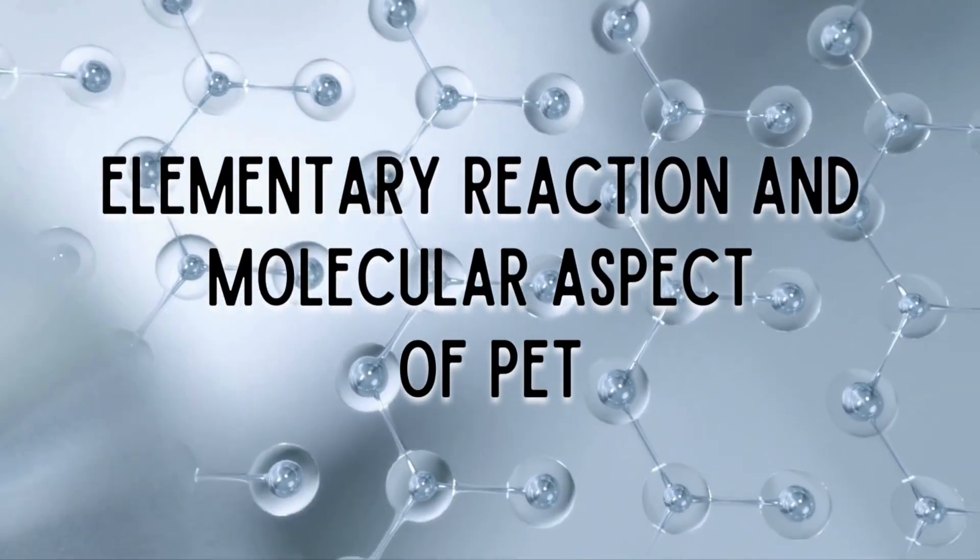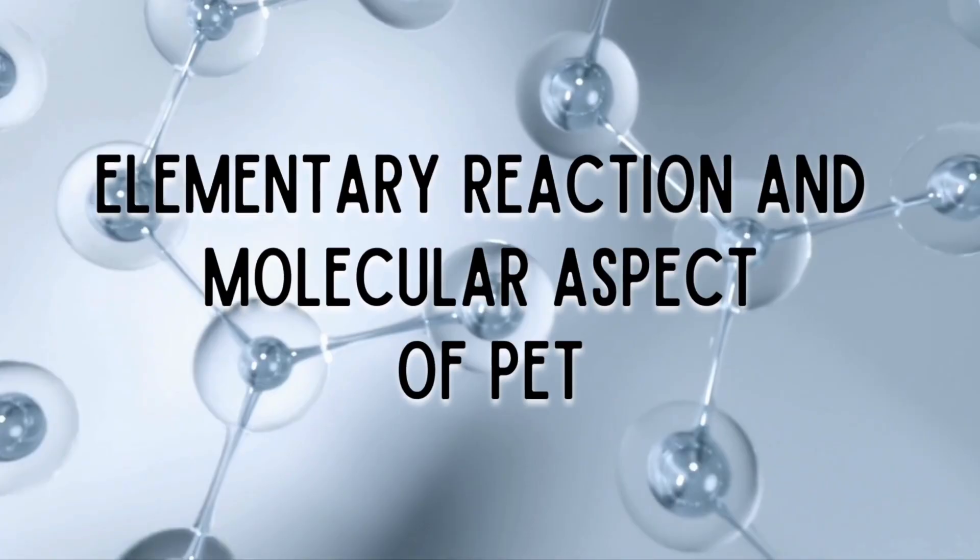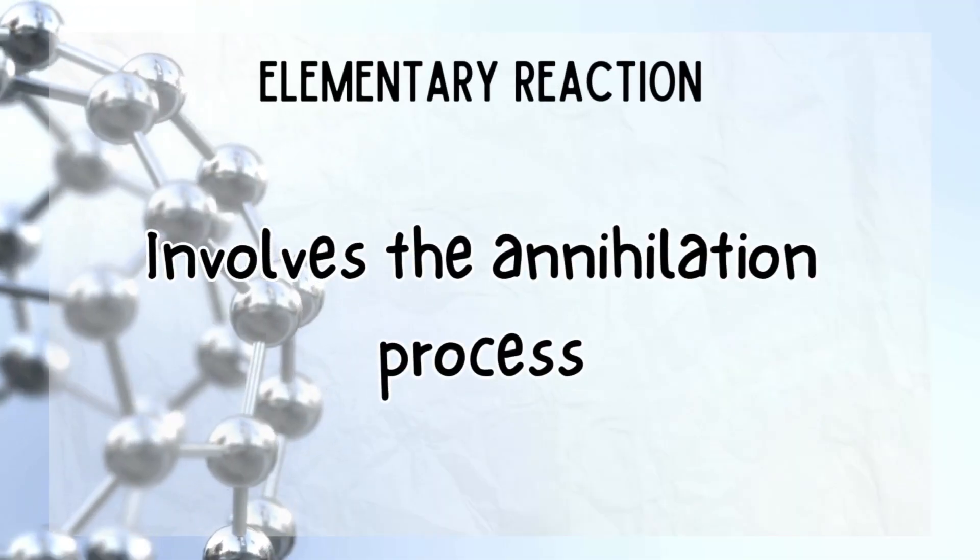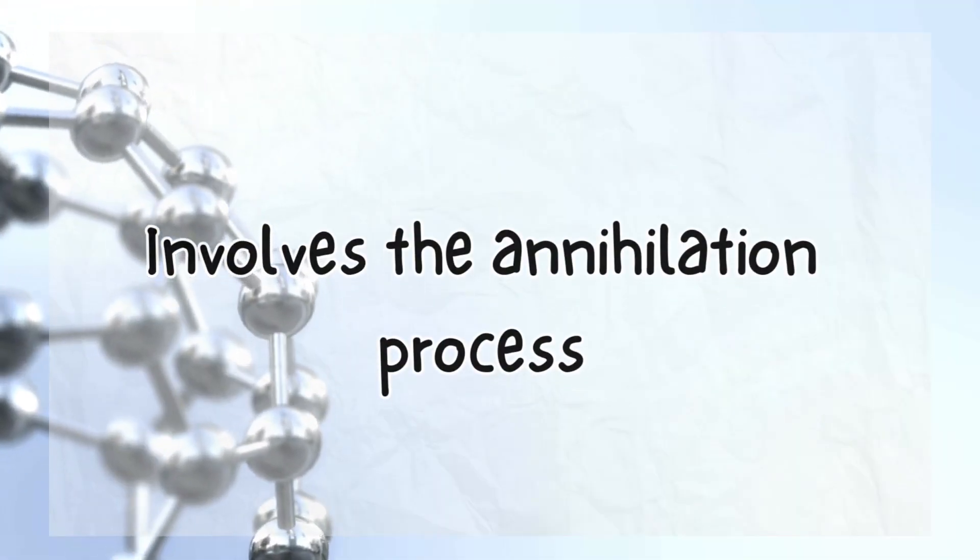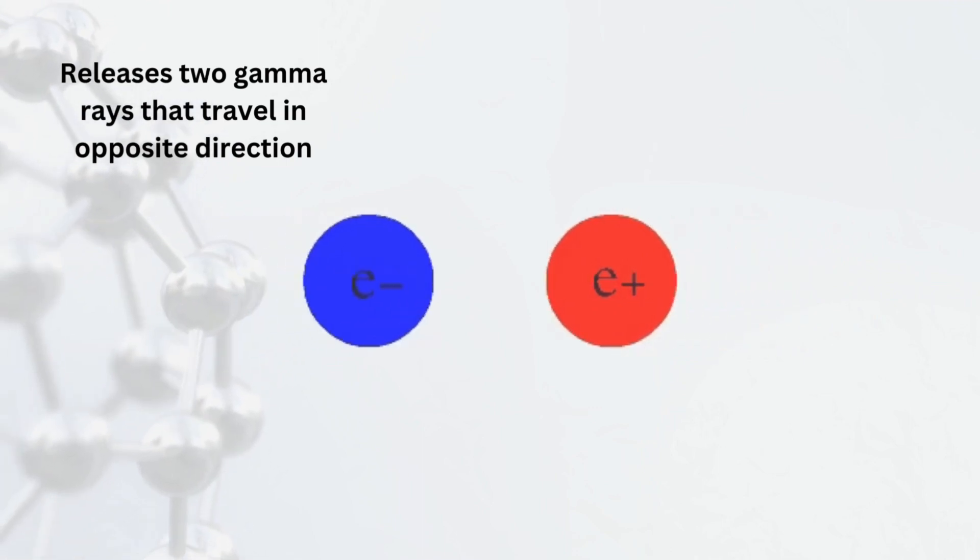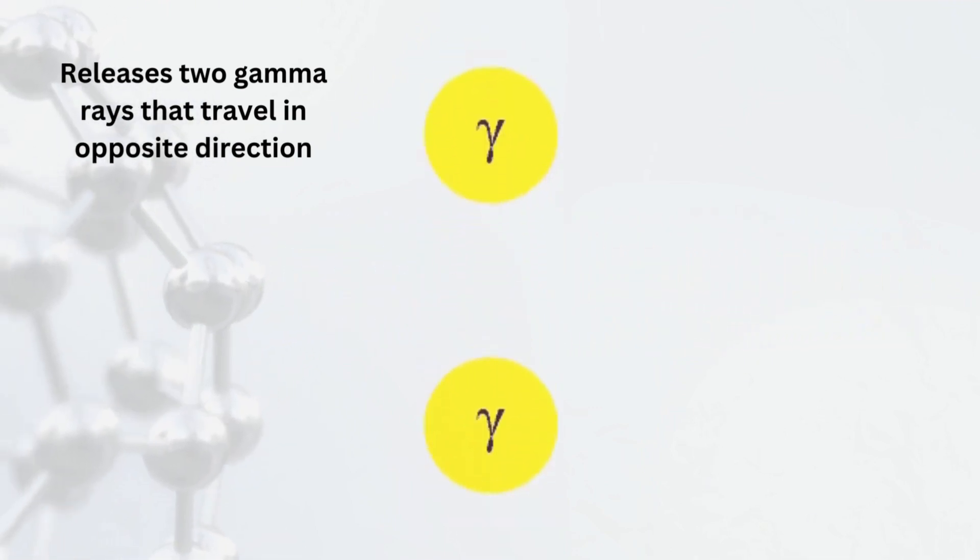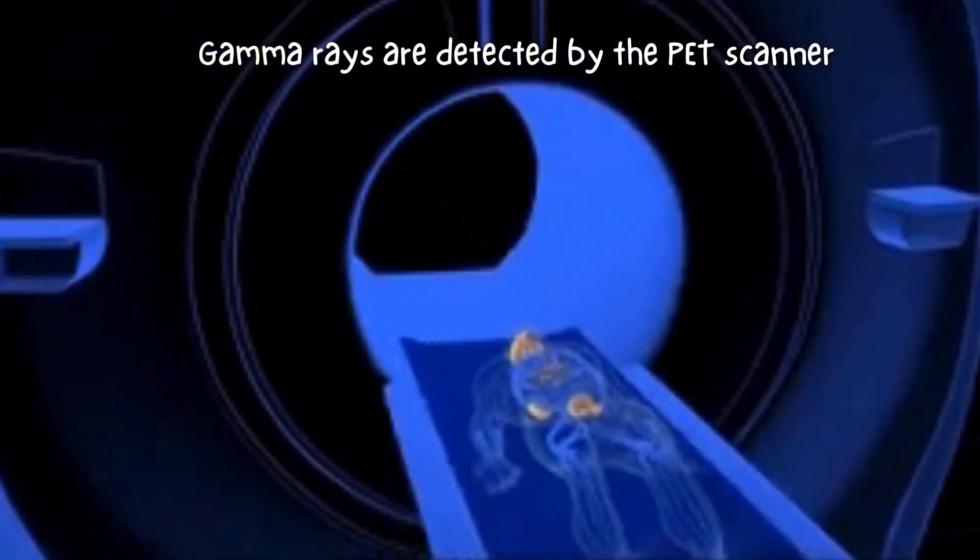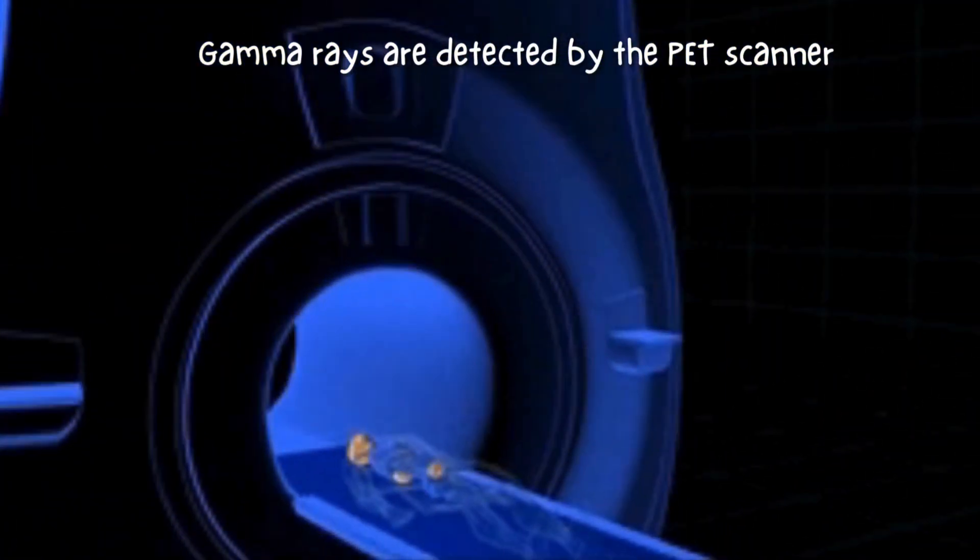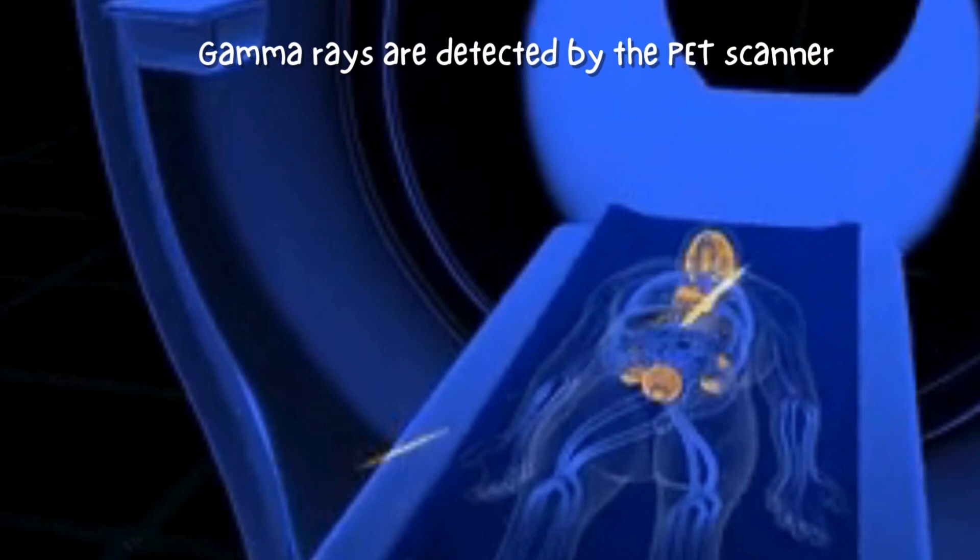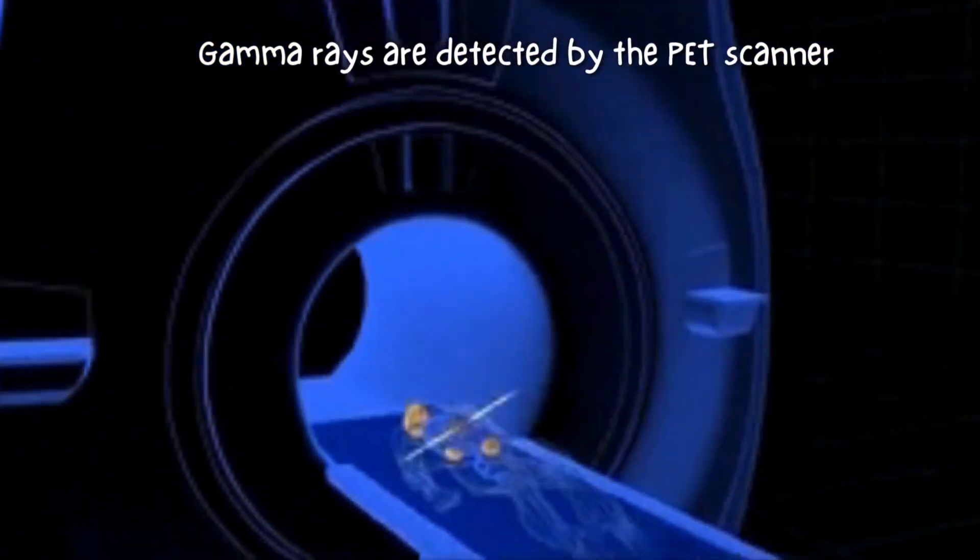Next, the limited reaction and molecular aspect of PET. This reaction involves the annihilation process. In this process, two gamma rays are released and travel in opposite directions. These gamma rays are then detected by the PET scanner and used to reconstruct an image of the tracer distribution within the body.